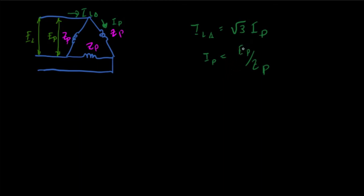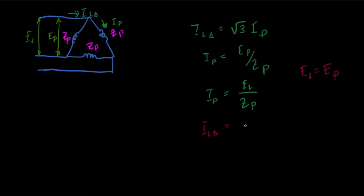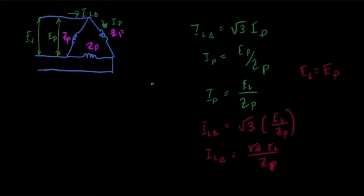For the delta connection, the line current equals √3 times the phase current. We solve the phase current: Ip equals the phase voltage over Zp. For a delta-connected system, the line voltage equals the phase voltage, so Ip equals VL over Zp. Therefore, the line current in delta is equal to √3 times VL over Zp.